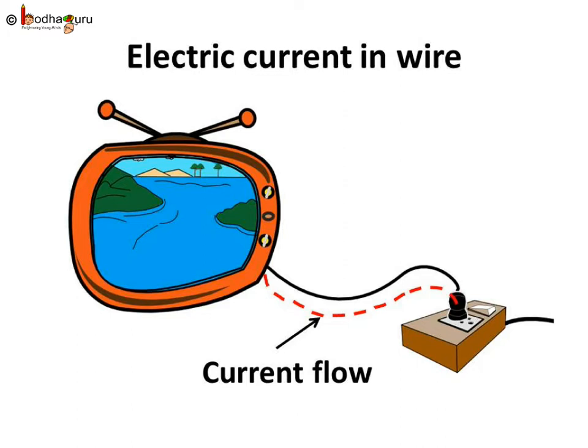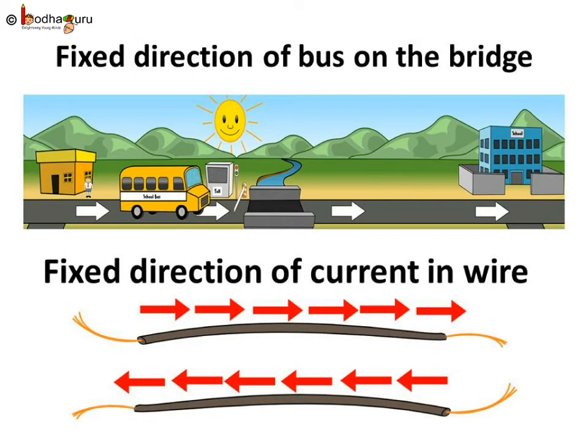So, when we say I can't watch TV because there is no electricity, it means there is no electric current flowing through the electric wires to run the TV. Does electric current flow in a particular direction or in any direction? As we saw, using the bridge A, the bus could go only one way, that is towards the school. Same way, electric current flows through wire in a fixed direction.